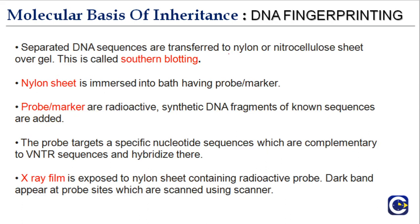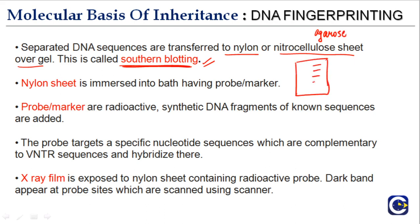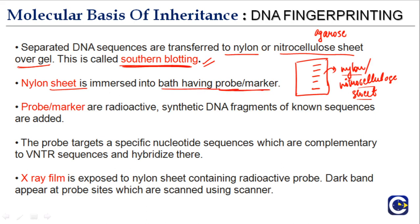The separated DNA sequences are transferred from the agarose gel to a nylon or nitrocellulose sheet — this process is called Southern blotting. The agarose gel separates DNA by size, but you cannot directly observe it on the gel, so it is transferred to the nylon or nitrocellulose membrane.